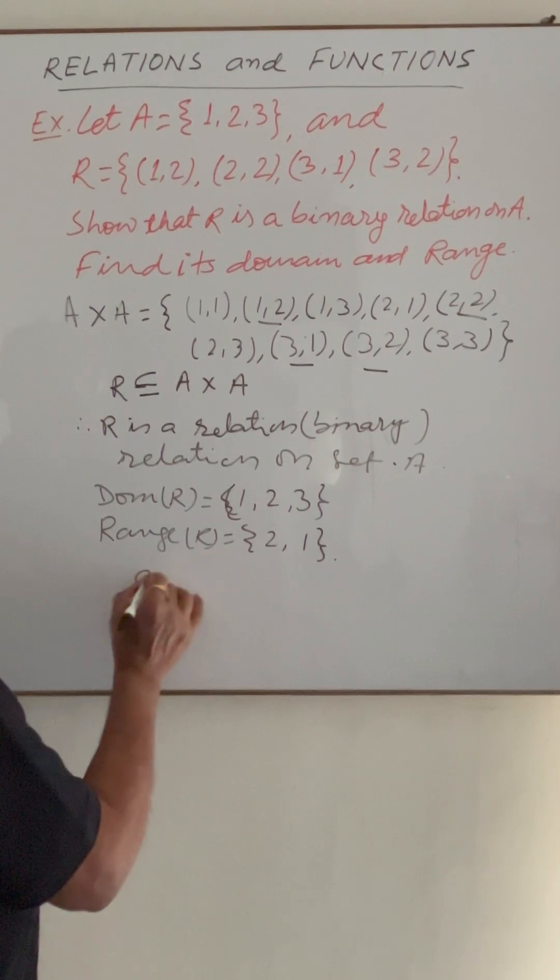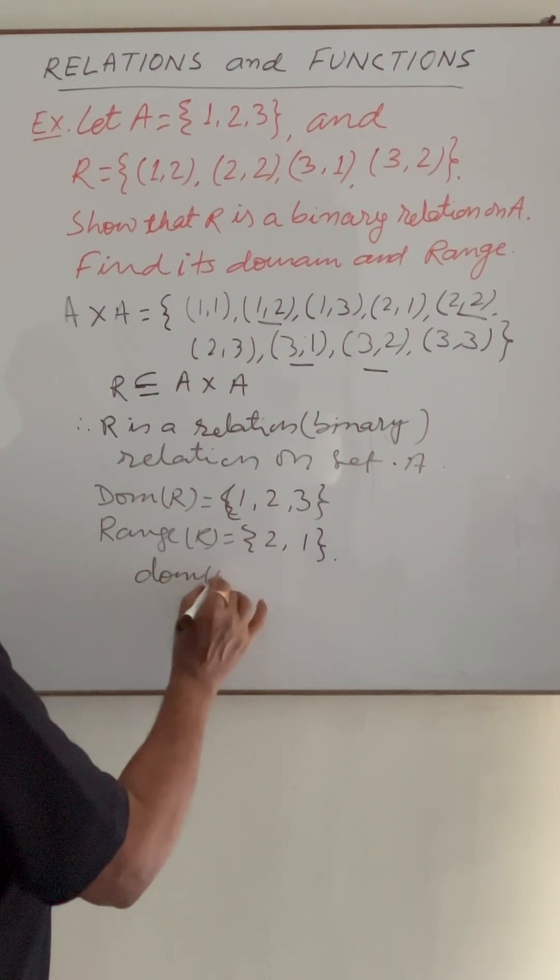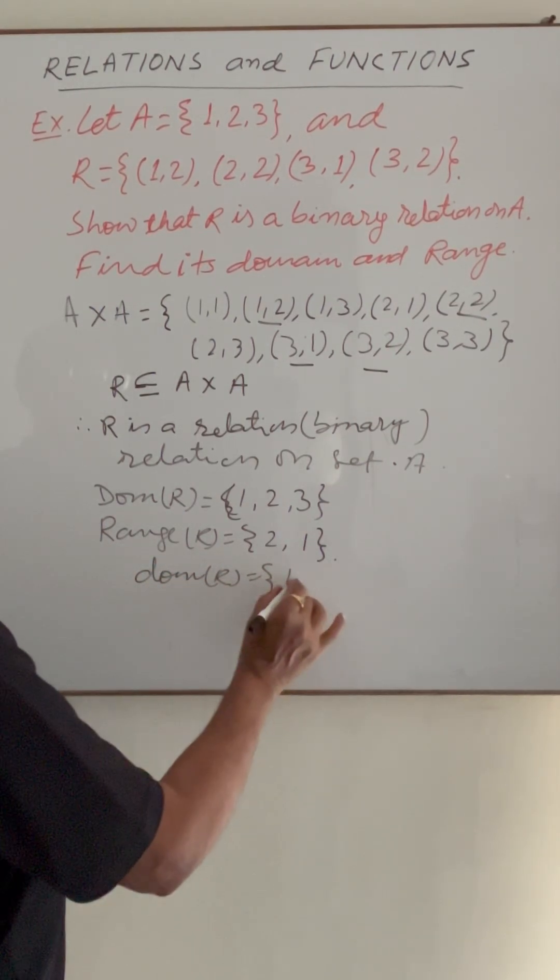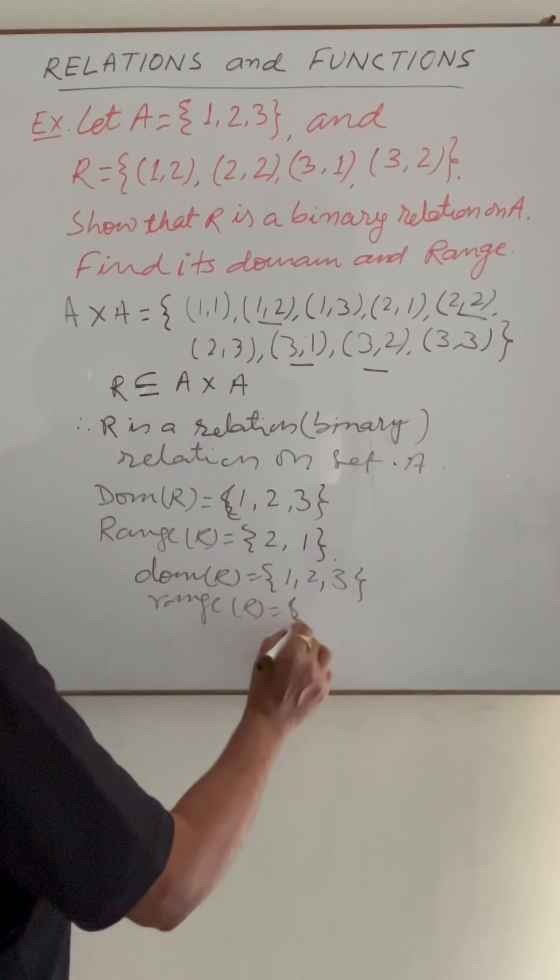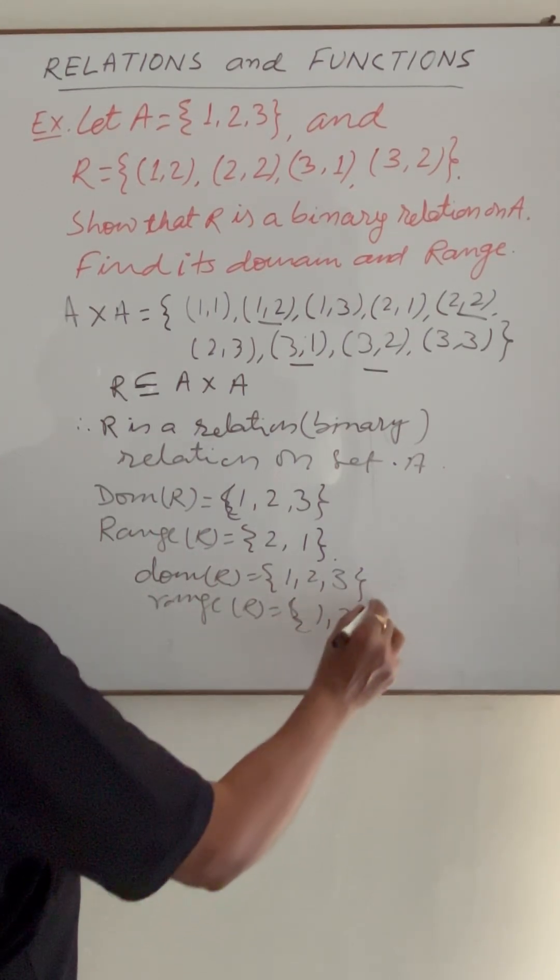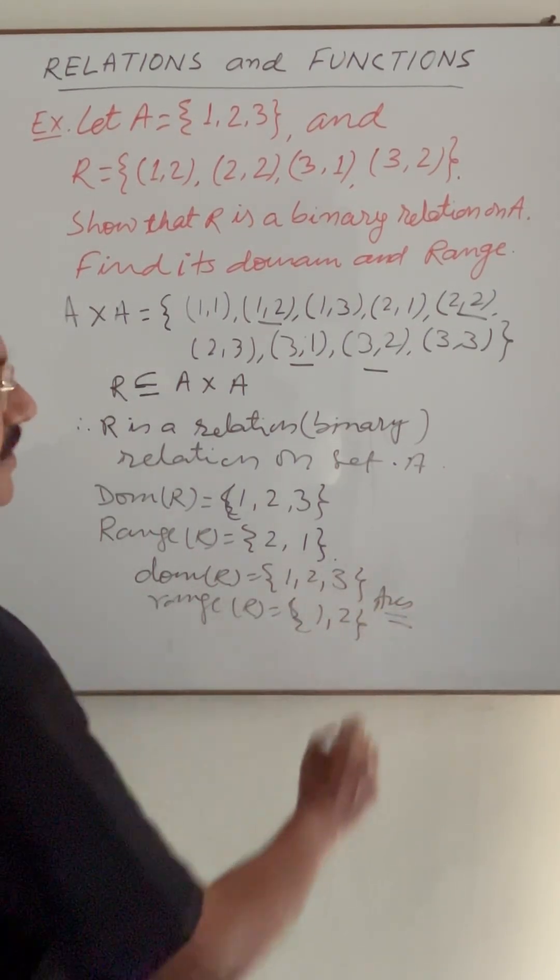So finally, we are getting domain of R is equal to set {1, 2, 3} and range of relation R is equal to {1, 2}. This is the answer. Very interesting question.